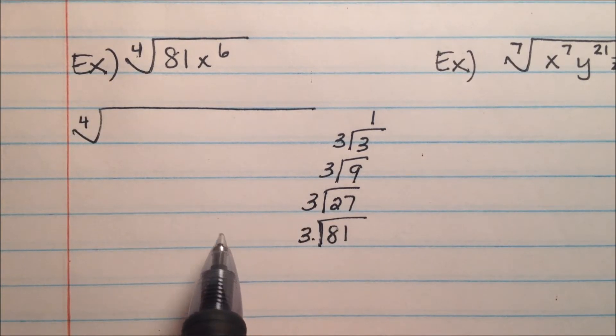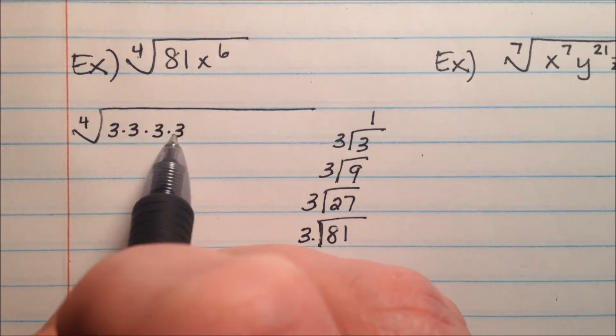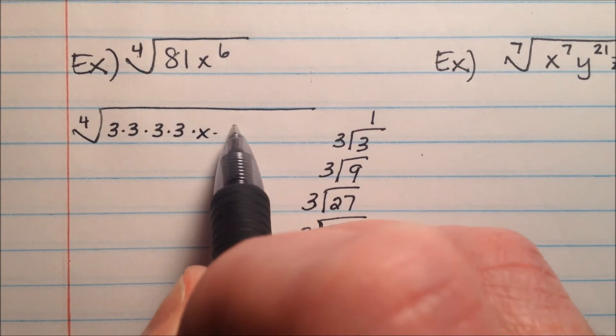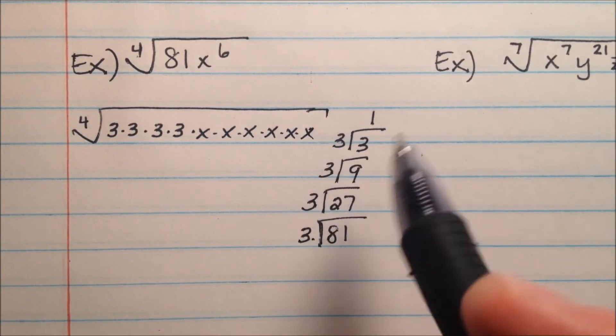So I'm going to write this whole thing out. So I have 1, 2, 3, 4 3's, and 1, 2, 3, 4, 5, 6 x's.